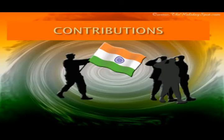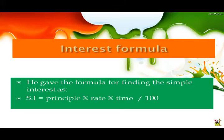The contributions of Brahmagupta are as follows. Interest formula: He gave the formula for finding the simple interest as SI = (Principal × Rate × Time) / 100.